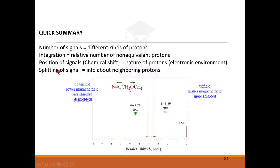This is very important for MCQ-type questions. You will be given a molecule and asked for the number of signals — just find the different kinds of protons using the A, B, C method. You will also get questions on splitting. A separate video will cover interpretation with many examples, and another on anisotropy. If you have any queries, post them in the comment section.